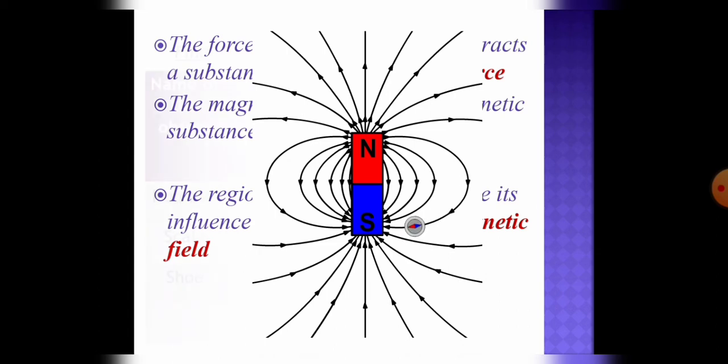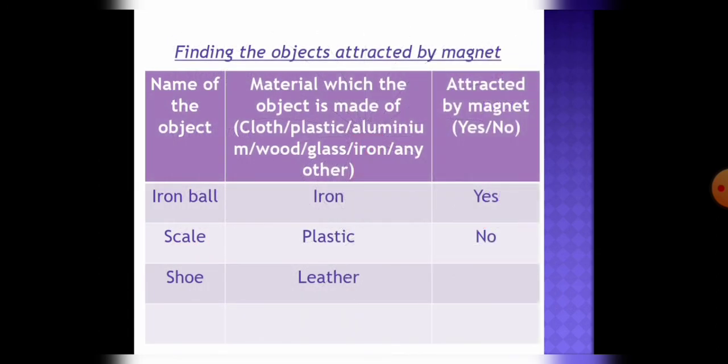Now there is a table mentioned in your book also. In this table some objects are mentioned. So you have to find out whether those objects are attracted by magnet or not. For example, iron ball is made up of iron and it is attracted by a magnet.